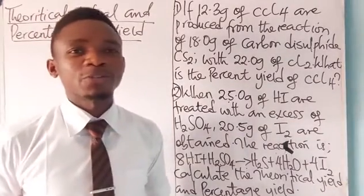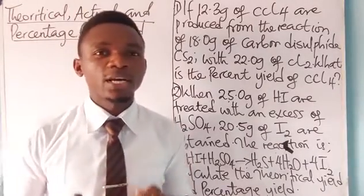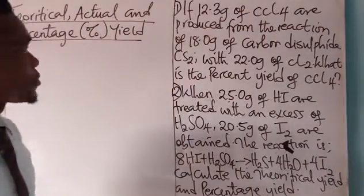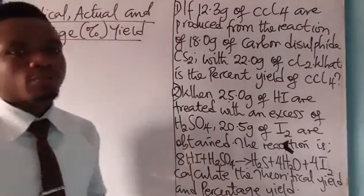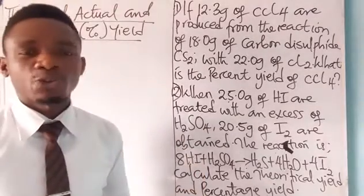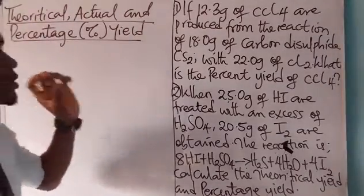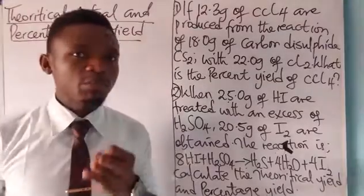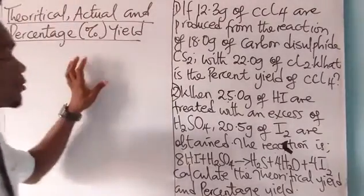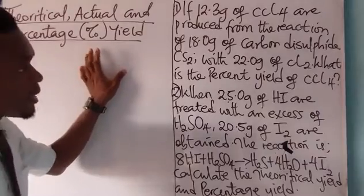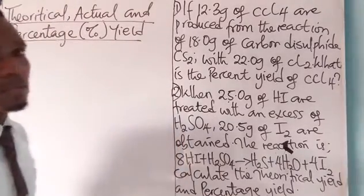Hello guys, good afternoon. You are welcome to the YouTube channel The Explicit Tutors. My name is Tutor Joseph. Please, as you are watching this video, don't forget to subscribe, like, share, and comment. In today's video we shall be discussing theoretical yield, actual yield, and percentage yield. In our previous class we dealt with some calculations in stoichiometry — limiting and excess reagents — although this topic is also under stoichiometry. Once I'm done with this topic I shall be taking the next part, which is acid, base, and salt.